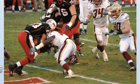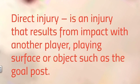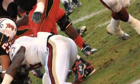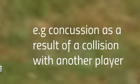Here's a picture of a game of NFL where two players have had quite a heavy collision — it's an example of a direct injury. The definition goes something like this: a direct injury is an injury that results from impact with another player, the playing surface, or an object such as a goal post. With this particular example, there would be a high chance of concussion because two players have had a rather heavy collision.